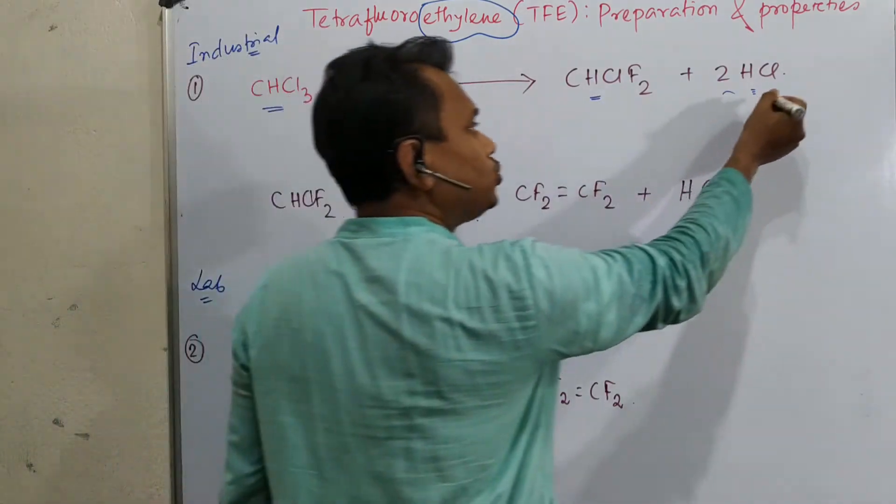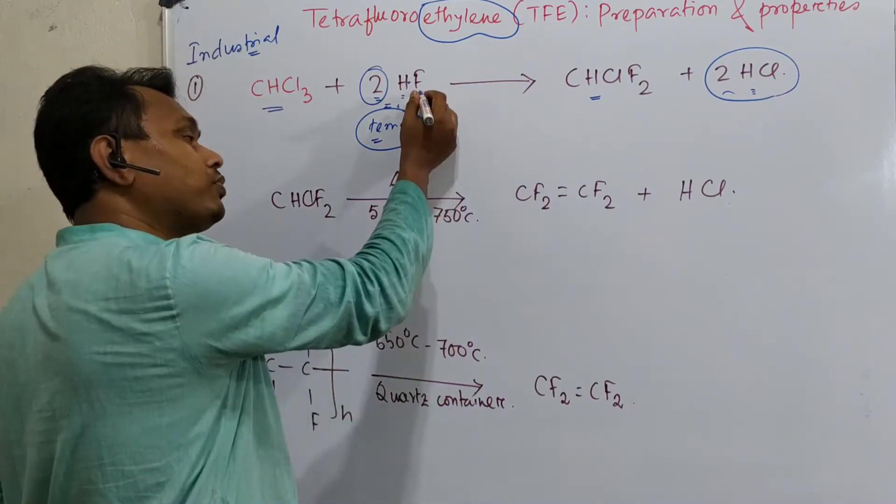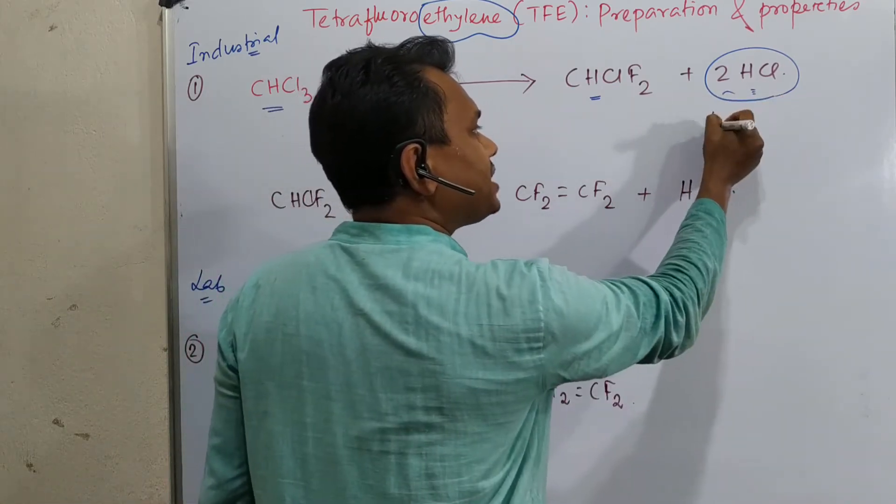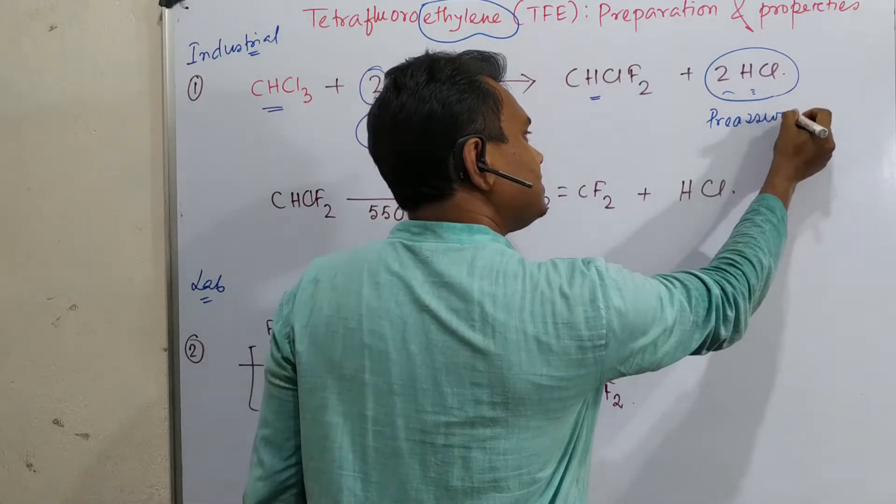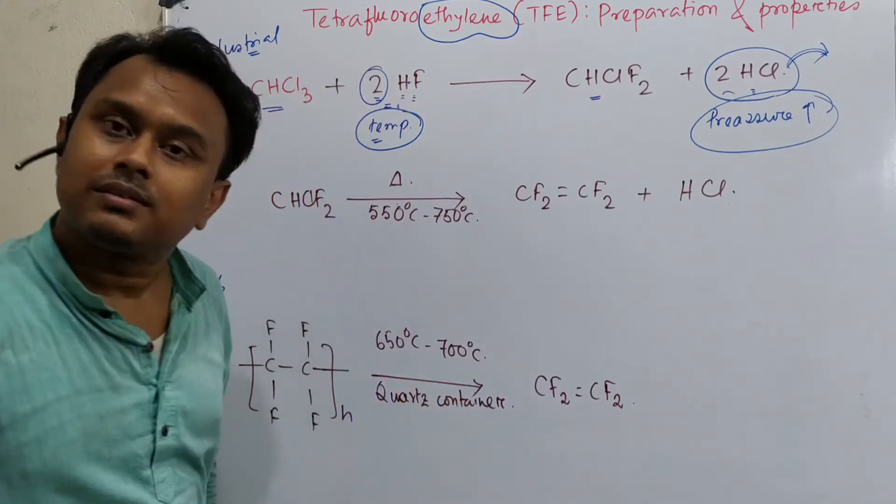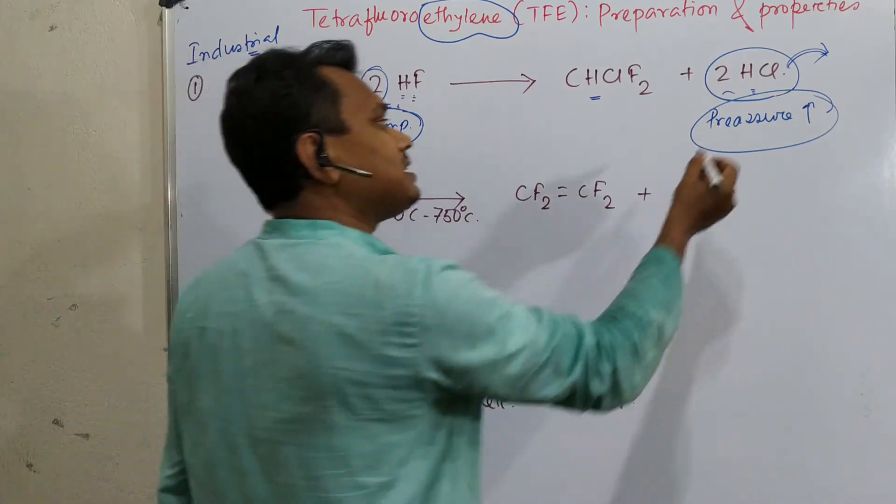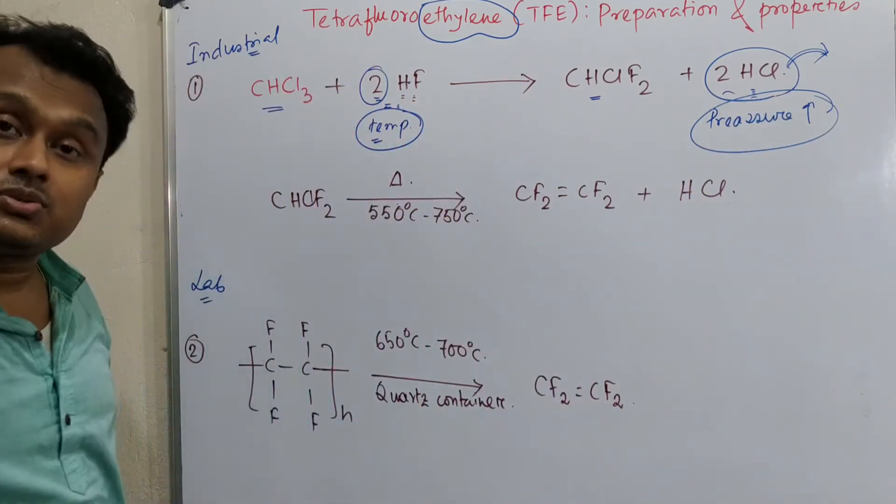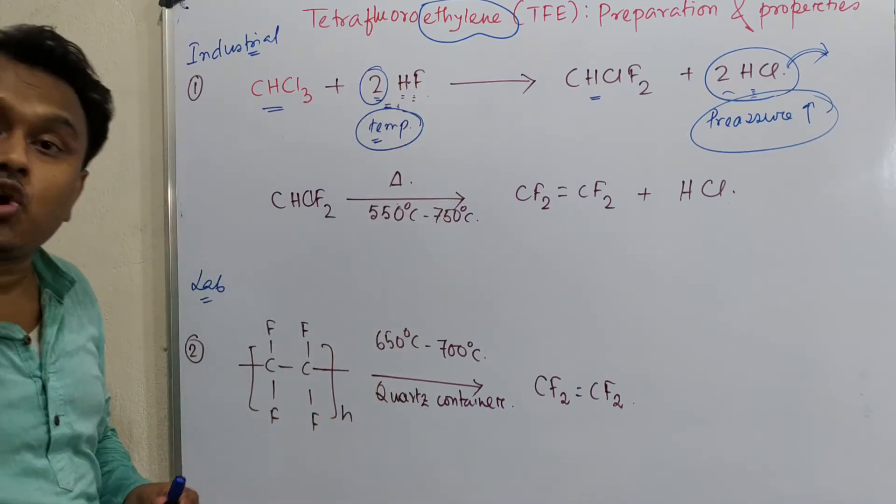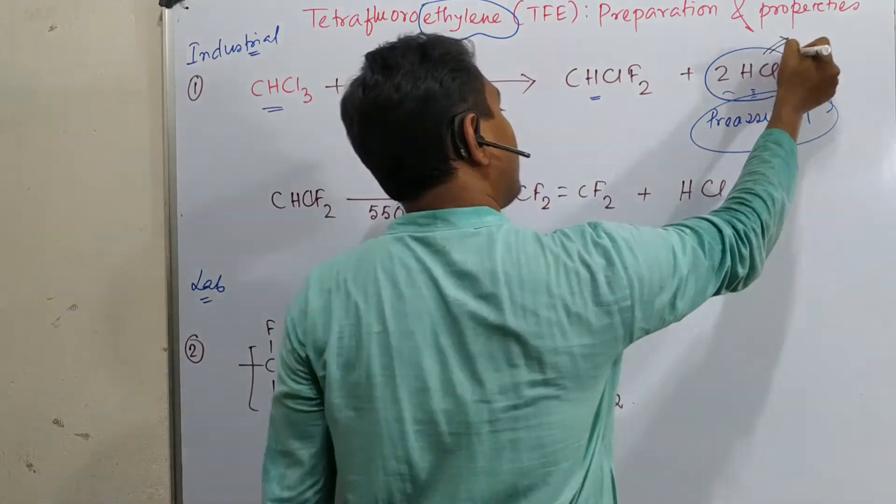Now, if you look at the boiling point, HF boiling point is higher than HCl. I have discussed in a dedicated lecture. So what happens? The pressure of the reaction vessel increases. And what they do? They take out this HCl from the container. So in this way, one part, the reaction should go in the forward direction. Second, this HCl is withdrawn.